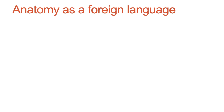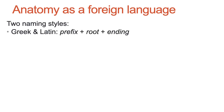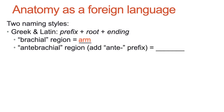There are two naming styles in anatomical terminology. One uses words derived from Greek or Latin, and these words consist of a root word attached to either a prefix or a suffix. For example, the term 'brachial' refers to the arm. If we add the prefix 'anti-', meaning 'before,' we get 'antibrachial,' which refers to the forearm.